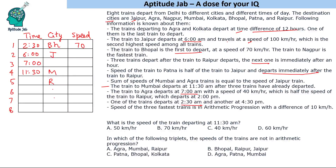The train to Jaipur departs at 6 AM — that is train two — with a speed of 100 kilometers per hour, which is the second highest speed among all trains. The train to Agra departs at 7 AM with a speed of 40 kilometers per hour, which is half the speed of the Raipur train.